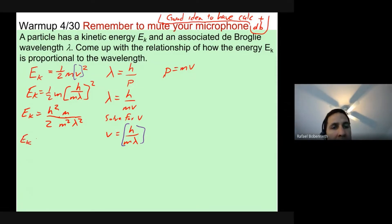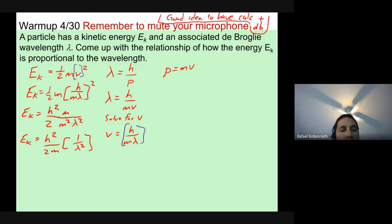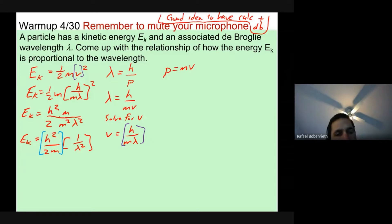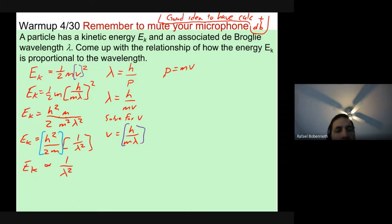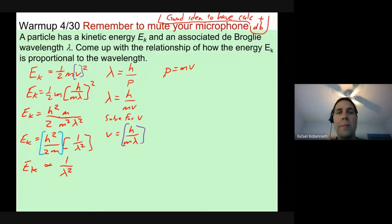One of the m's cancels, and taking everything constant out front gives h squared over 2m, with 1 over lambda squared remaining. So the kinetic energy is proportional to the inverse of the square of the wavelength. That's your warm-up answer.